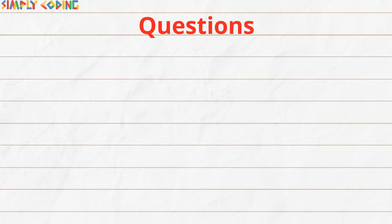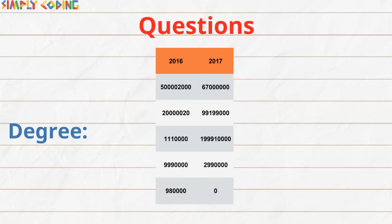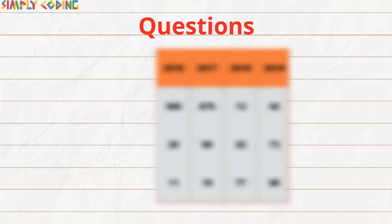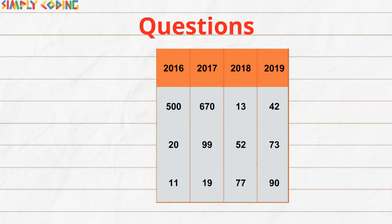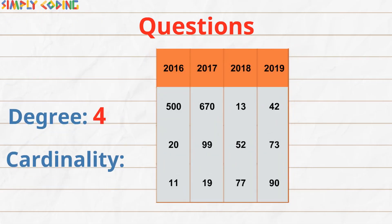Let's quickly take a look at some questions. In this table, what is the degree and cardinality? Degree is 2 and cardinality is 5. Another example: in this table, what is the degree and cardinality? Degree is 4 and cardinality is 3.